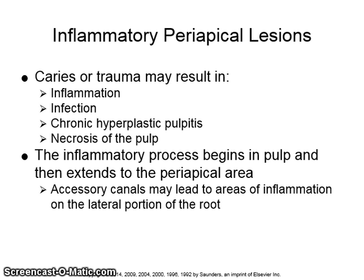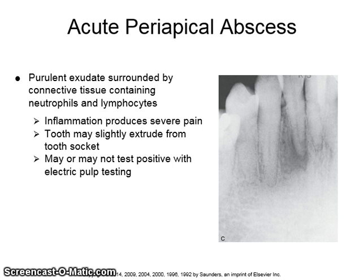Accessory canals may lead to areas of inflammation on the lateral portion of the root. The acute periapical abscess is composed of purulent exudate surrounded by connective tissue which contains neutrophils and lymphocytes. The inflammation produces severe pain.